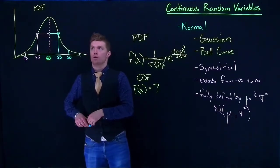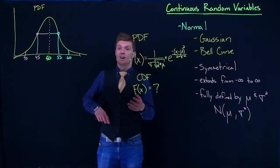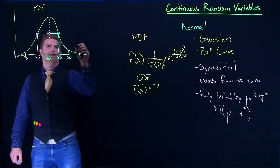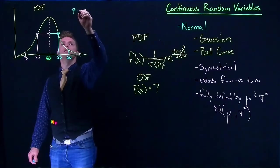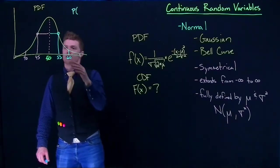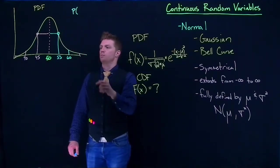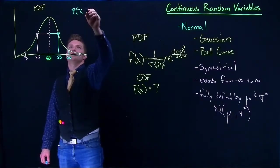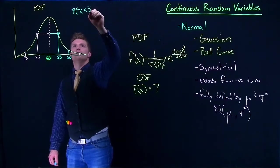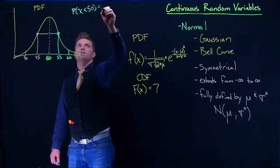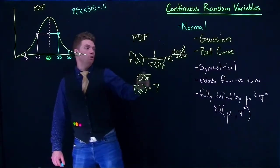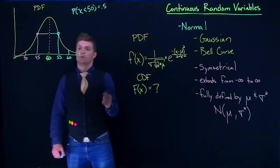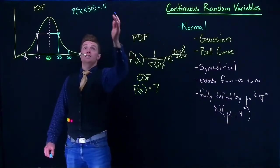Or we could go one standard deviation below, which would take us to 45, and then another standard deviation below would take us to 40. And we can go kind of further and further out, I'll just tick off where three standard deviations are. We can use what are called the empirical rules to just kind of get some idea of what the probabilities are.